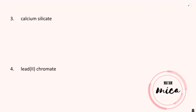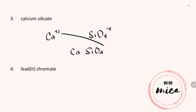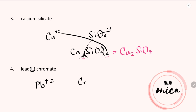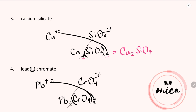Now let's have calcium silicate. Calcium with element symbol Ca has a positive 2 charge, while silicate (SiO₄) has a negative 4 charge. Using the crisscross method and reducing the subscripts to their greatest common factor of 2, the chemical formula is Ca₂SiO₄. Now for number 4, lead(II) chromate: lead is a transition metal with positive 2 and positive 4 charges. Based on the given name, positive 2 is used. Chromate (CrO₄) has a negative 2 charge. Using the crisscross method, the chemical formula is PbCrO₄.